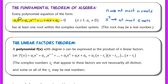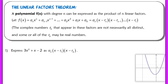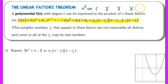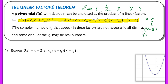Sort of similar to that idea is the linear factors theorem. What the linear factors theorem states is that if you have a polynomial with degree n, you can express that polynomial as the product of n linear factors. Let's say you started with a polynomial with a degree of five — you will always be able to express it with five linear factors. Now these factors don't have to necessarily be distinct, so you might see a multiplicity. And these linear factors don't necessarily have to be real — they're all of the form x minus r, where r doesn't have to be a real number.